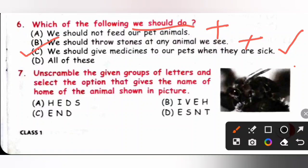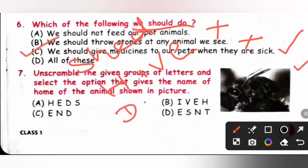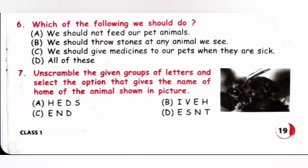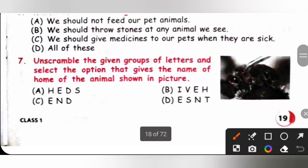Question 7: Unscramble the given group of letters and select the name of the home of the animal shown in the picture. The animal shown is a honey bee. Honey bees live in a hive. The options are A. Shed, B. Hive, C. Den, D. Nest. We know honey bees live in a hive, so option B is the correct answer.